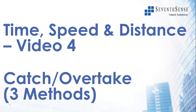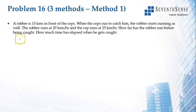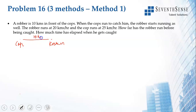We will solve these problems using three methods, so I will teach you all three and you can choose the one most convenient for you. Here's the first problem: a robber is 10 kilometers in front of the cop. When the cop starts running, the robber also starts running — so they start at the same time, the only difference being that the robber is 10 kilometers ahead. The robber's speed is 20 km/h and the cop's speed is 25 km/h.